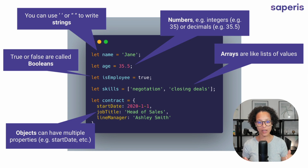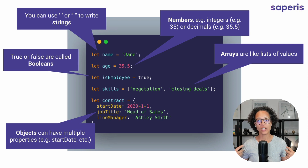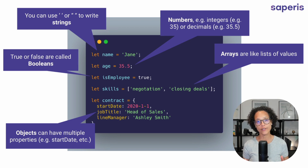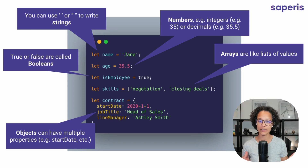The last variable we see is 'contract', and that contains an object. An object can have multiple properties — start date, job title, line manager. These are all properties and they're written with keys and values. Start date is the key and the value is 2020-01-01.